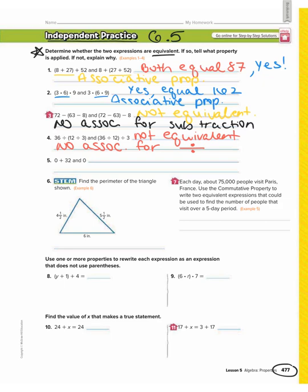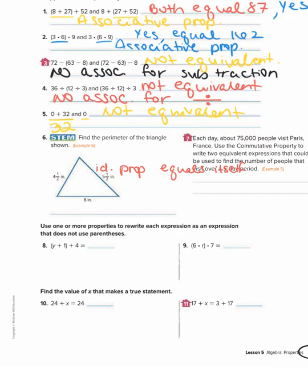Number 5: 0 plus 32 is 32, and that's not equal to just 0. So this is not equivalent. This looks like it would be the identity property, but the identity property says that anything plus 0 equals itself. This is saying that 0 + 32 and 0 are equivalent, which is not correct.